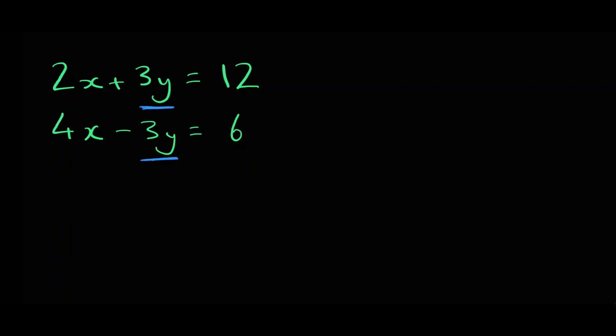So 2x plus 4x equals 6x. 3y plus negative 3y is 0, so we can leave it out, and 12 plus 6 is 18. From adding the two equations together we have 6x equals 18. We can divide both sides by 6 and that tells us that x equals 3.